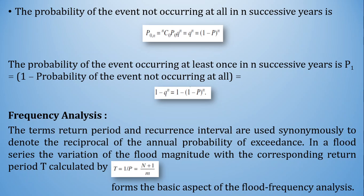Moving towards frequency analysis: the terms return period and recurrence interval are used synonymously to denote the reciprocal of the annual probability, that is 1/P. In a flood series, the variation of flood magnitude with the corresponding return period T is calculated as T = 1/P = (n + 1) / m.